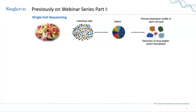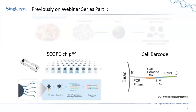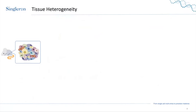In Part One you also learned about our core technology — the scope chip, the cell barcode, how we partition cells and perform analysis, and how to prepare libraries. In this webinar, I'm going to talk more about how to get your experiment started, starting from the tissue.